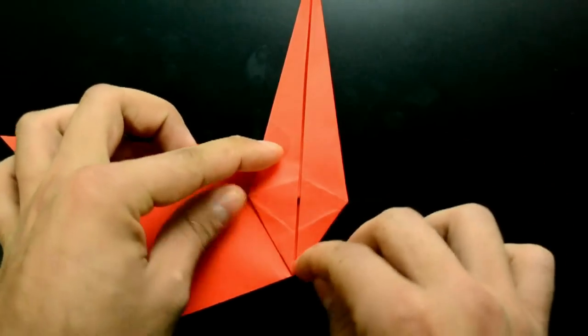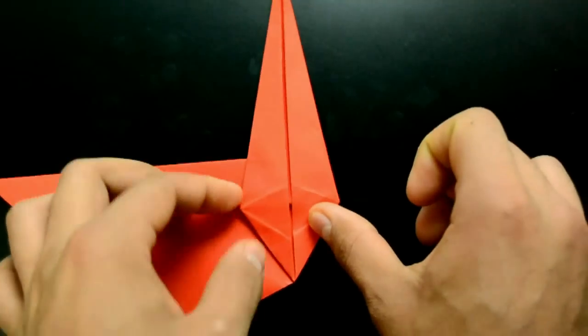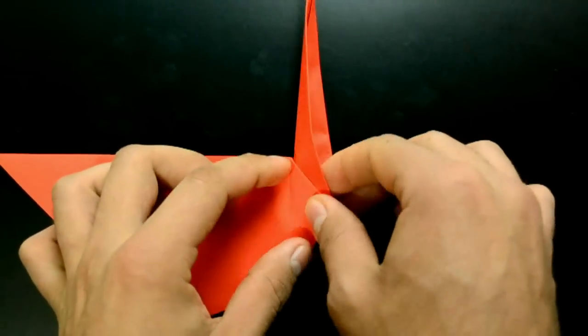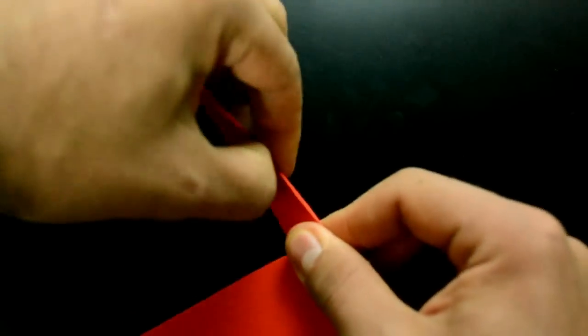Now, we need to close this tip in the middle. Like this. Creating the neck of the swan.